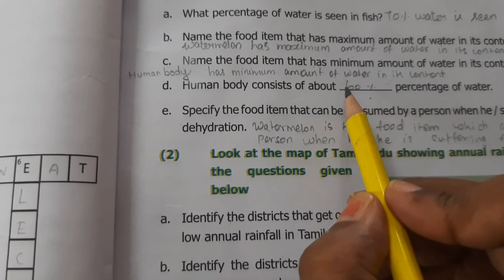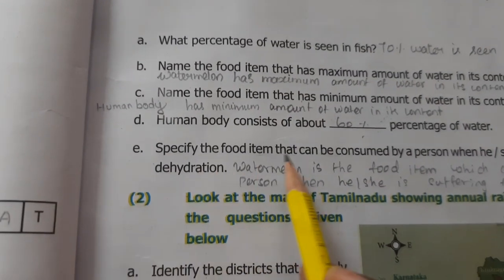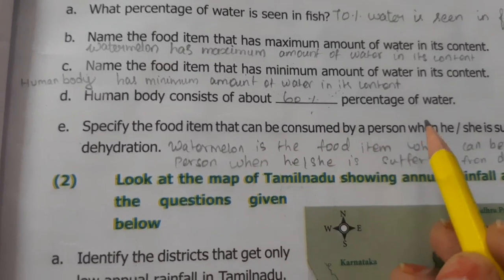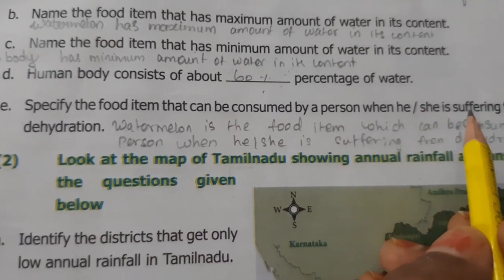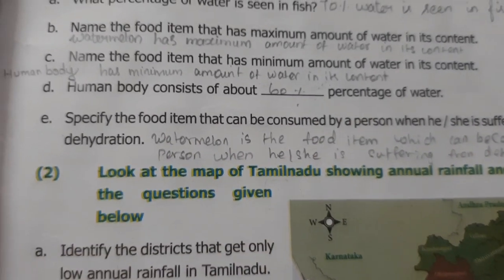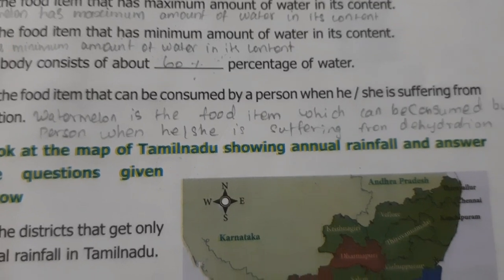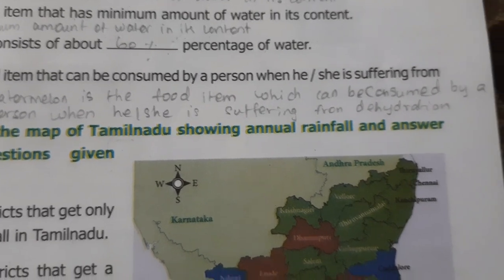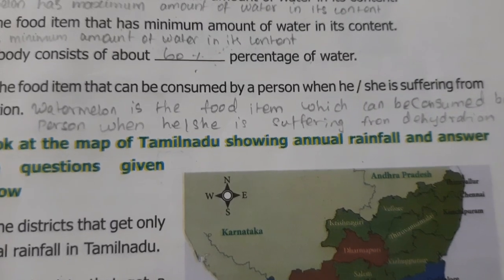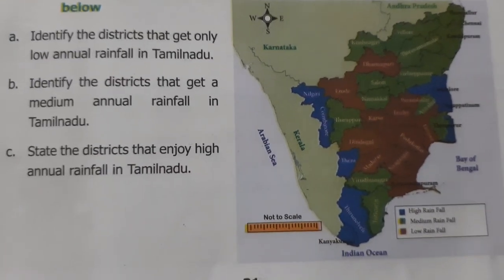Human body consists of about 60 percentage of water. Specify the food item that can be consumed by a person when suffering from dehydration. Since watermelon has the highest water content, watermelon is the food item which can be consumed by a person when suffering from dehydration.